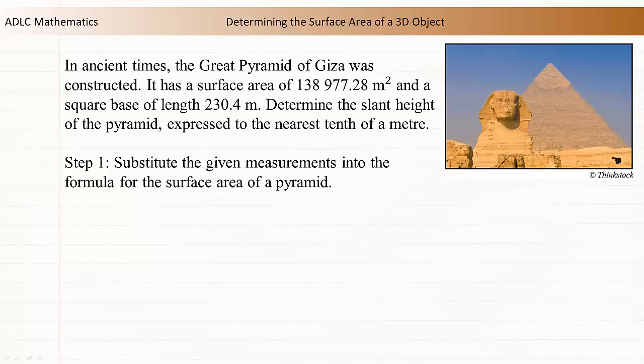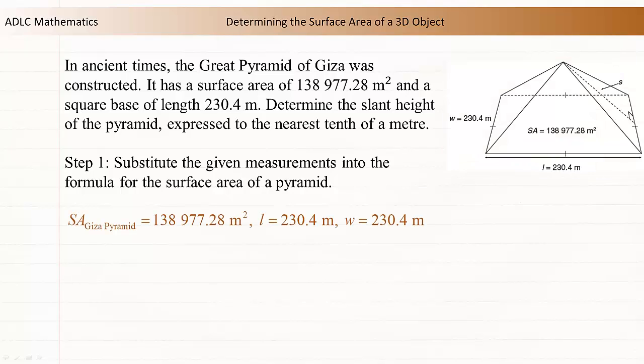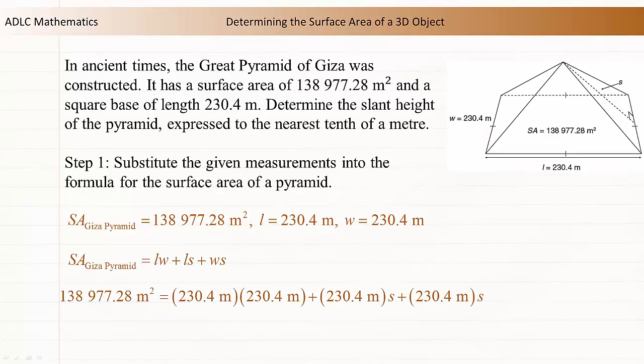Step 1: Substitute the given measurements into the formula for the surface area of a pyramid. The surface area formula for the pyramid is length times width, added to the length times the slant height, added to the width times the slant height.